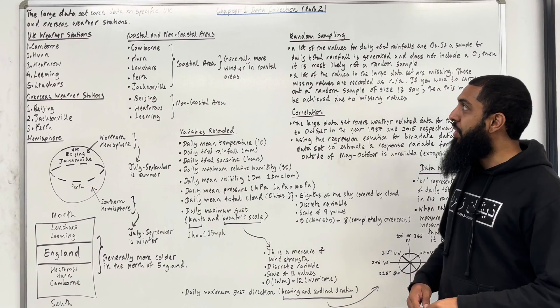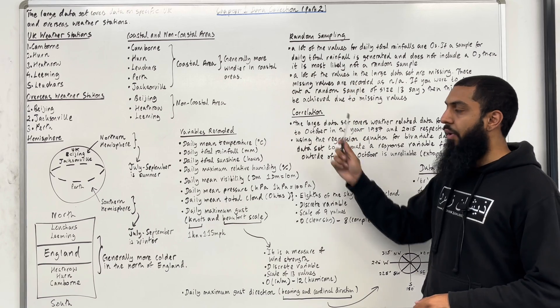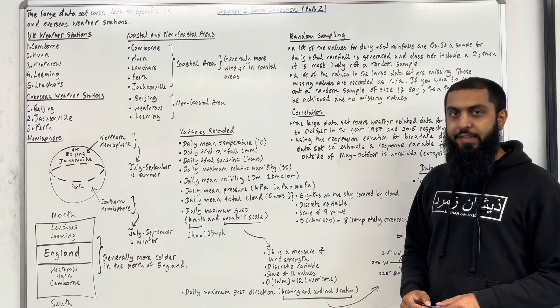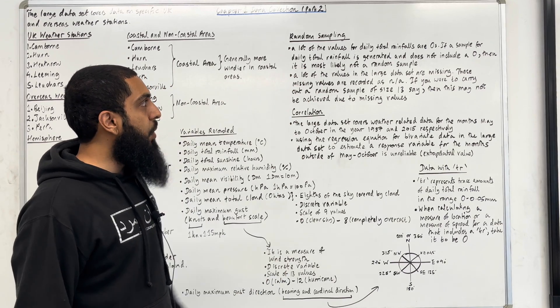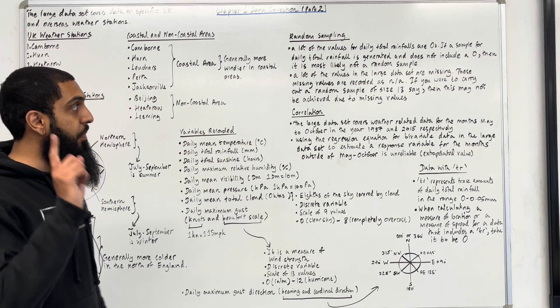Now I'm going to go through random sampling and correlation using the large data set. Let's have a look at this. A lot of the values for daily total rainfall are 0. That's a very important fact.